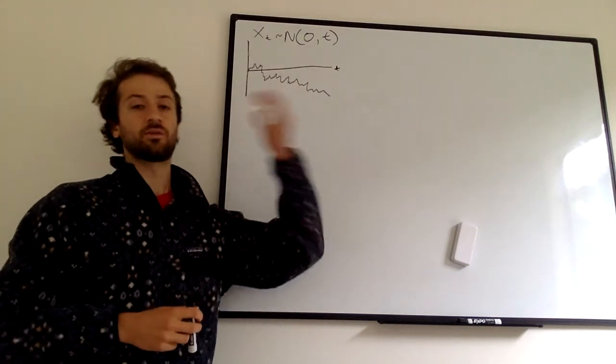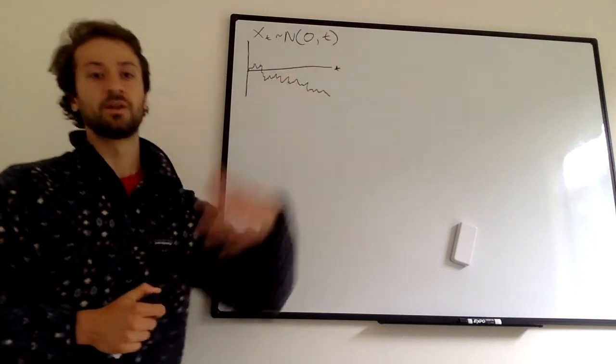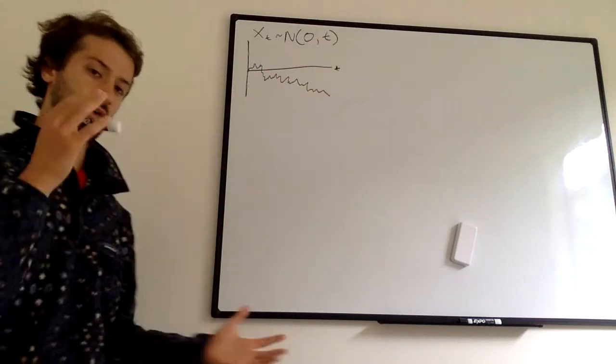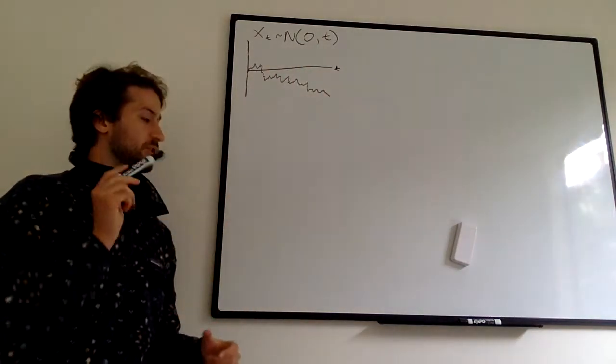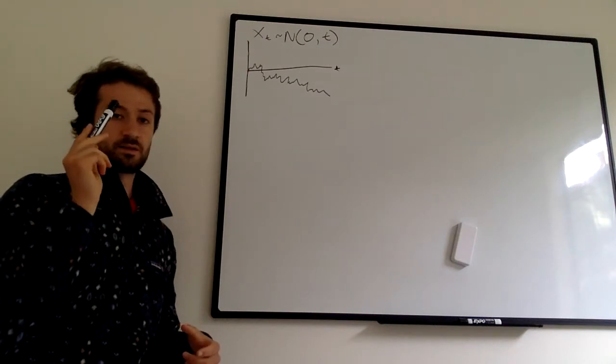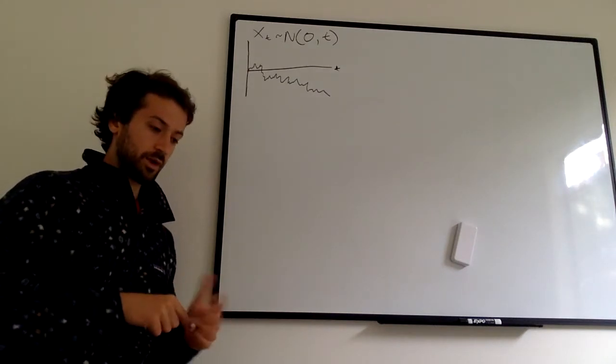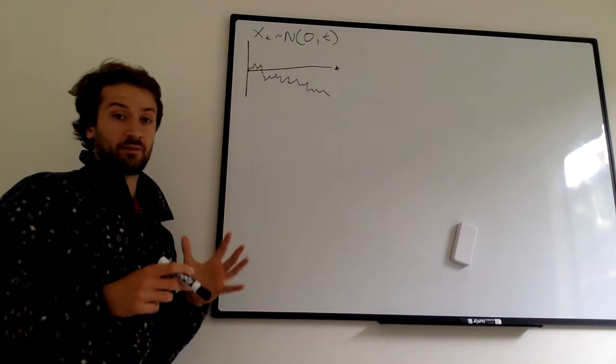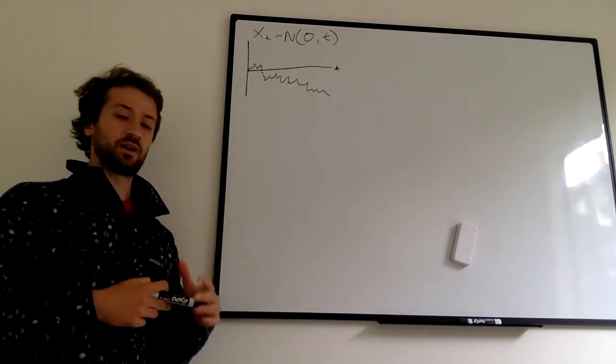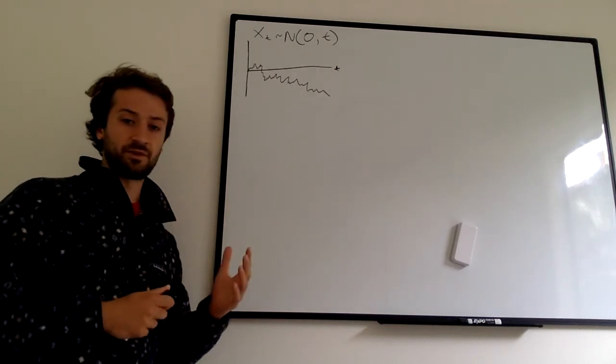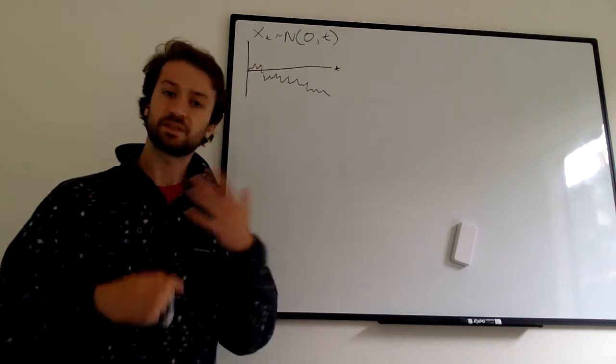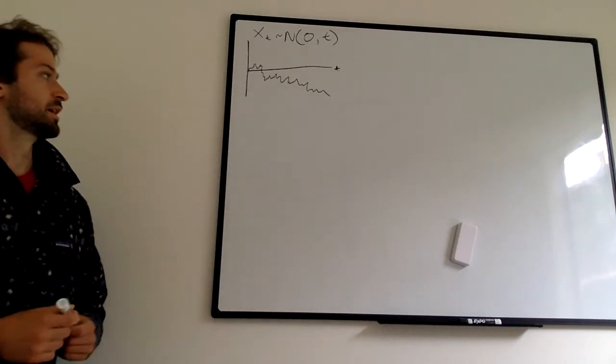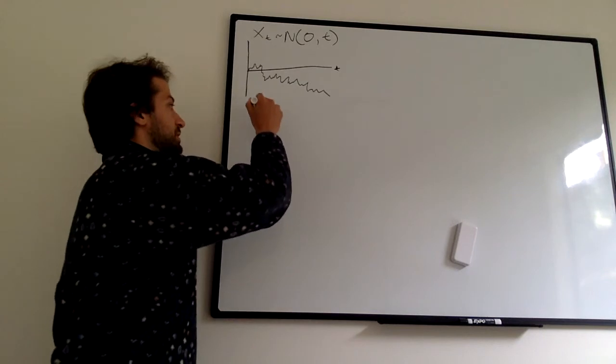The longer you're projecting out, the longer you're looking out, the bigger variance. So variance grows with time. We're going to talk about a very cool property of Brownian motion, and that property is reflection.